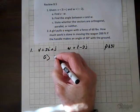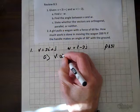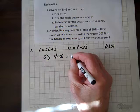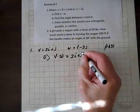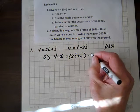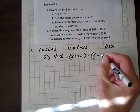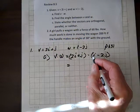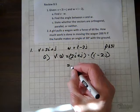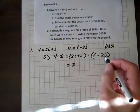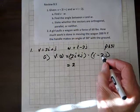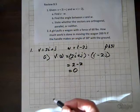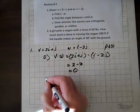the dot product v dot w equals 2i plus j dot i minus 2j, which equals the coefficient on i times the coefficient on i, which is 1 times 2 is 2, and minus 2 times 1 is minus 2, and that is 0. So, that's the dot product.